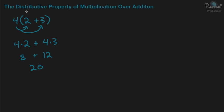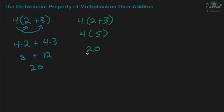Now, at first glance, you'll probably wonder why are we doing this? Why bother with multiplying the 4 times the 2, and then the 4 times the 3? Why don't you just add the 2 and the 3 inside the parentheses first, and then do the multiplication? That's what we normally do when you use the order of operations. So if you do it that way, you'll get the same answer. It'll be 2 plus 3, which is 5, and then 4 times 5, which is 20.